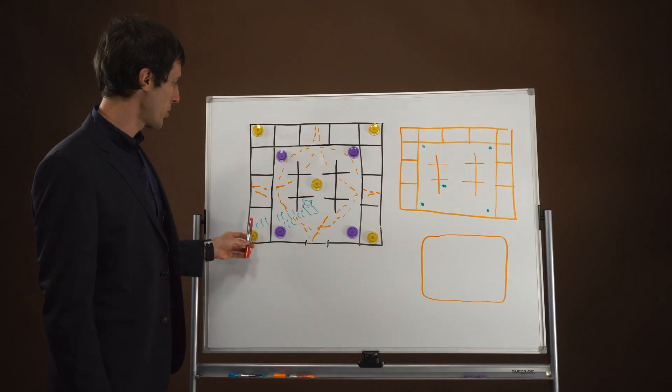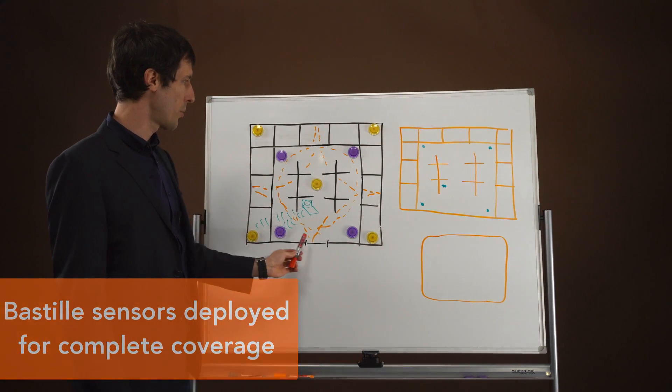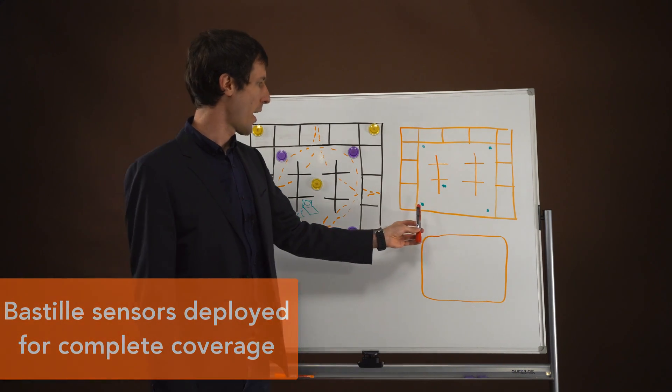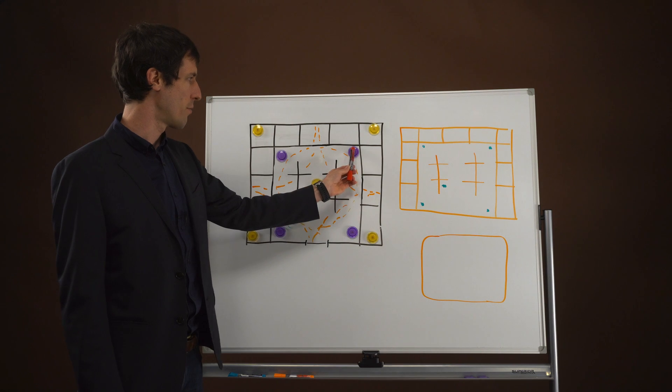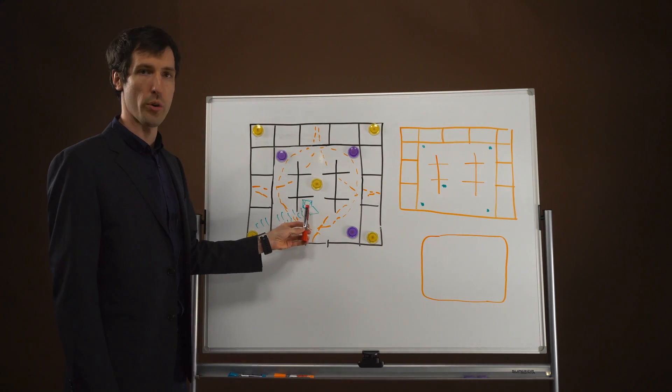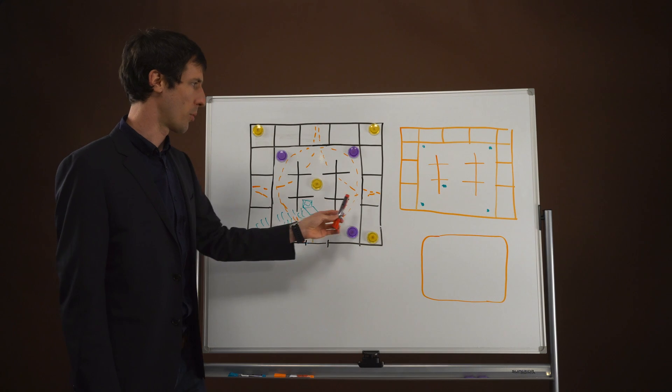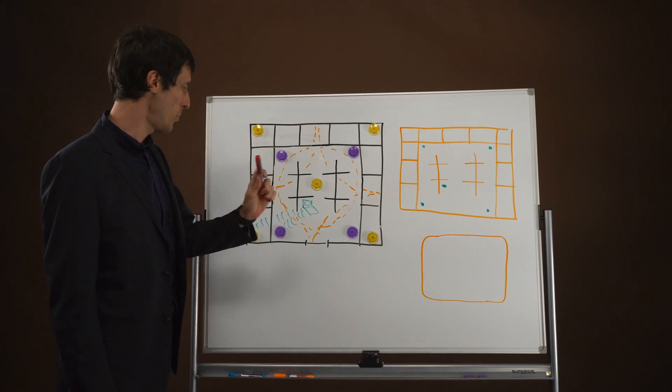We've established and deployed these Bastille sensors to give you complete coverage of this floor, and these legitimate corporate Wi-Fi access points have been discovered and localized at these points, as well as an employee's laptop that's using that corporate Wi-Fi, and we can see them being localized at their cubicle.